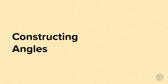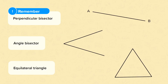Constructing angles is different from drawing angles. When you're drawing angles, you would use a protractor to measure the angle that you need to draw. When you are constructing angles, you can't use a protractor.